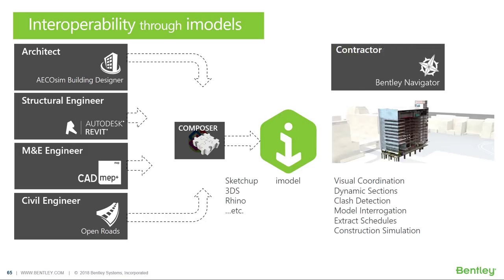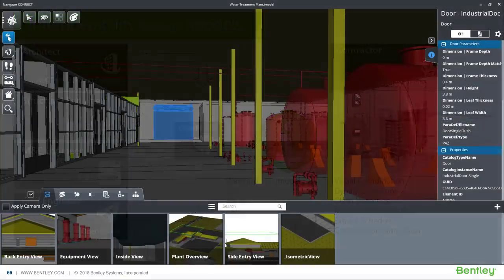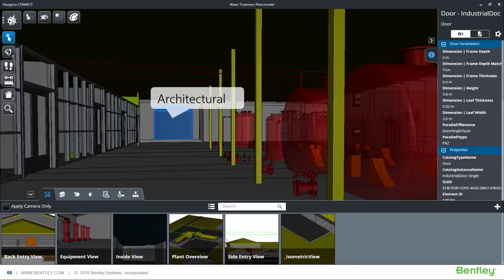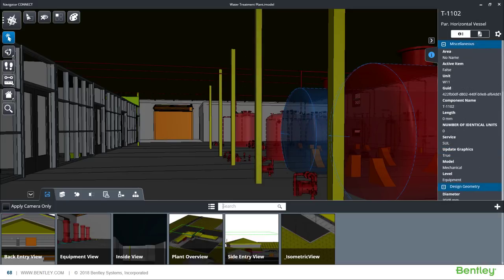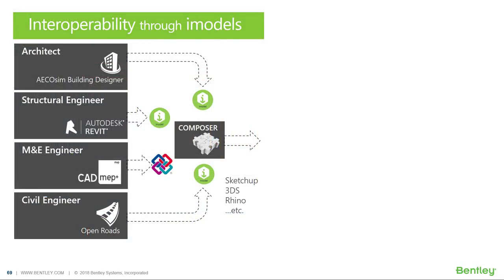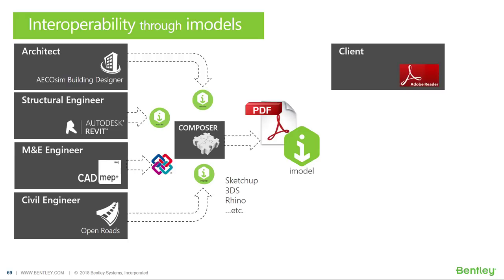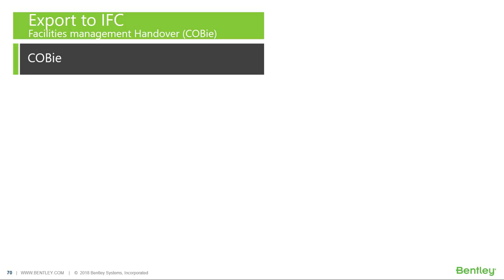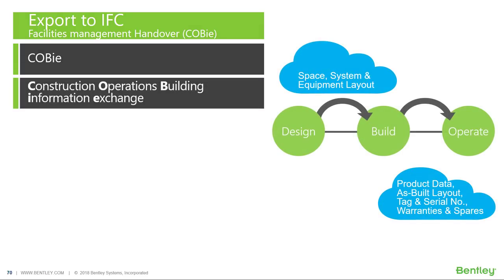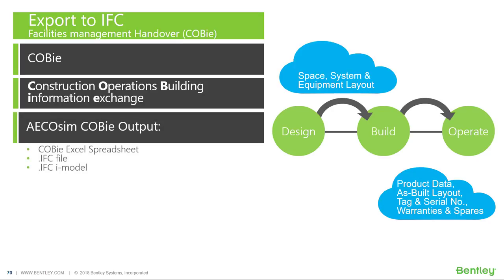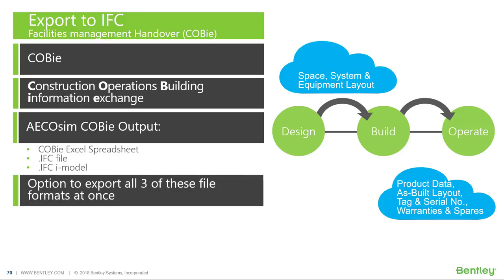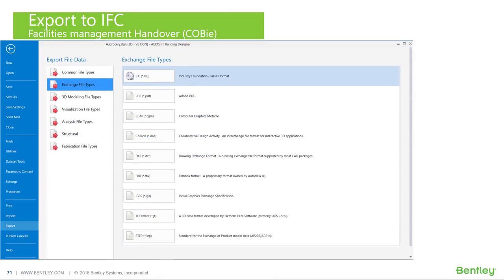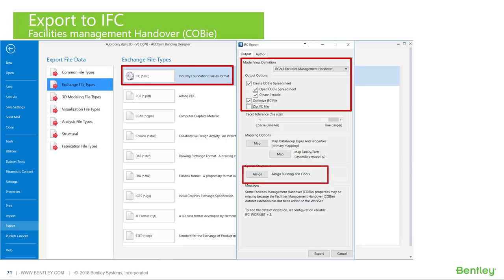People can view iModels through Bentley Navigator for contractors or vendors. In Bentley Navigator, you can select different disciplines in a particular iModel, such as architecture, structure, or even plumbing. For clients, we can follow the same method and generate 3D PDFs for review. Based on the IFC facility management handover model view definition, COBIE is an information exchange specification that captures data during design, construction, and commissioning for operations and management. Ecosim has an option for COBIE Excel spreadsheet, IFC file, IFCI model, and also the option to export all three file formats at once.